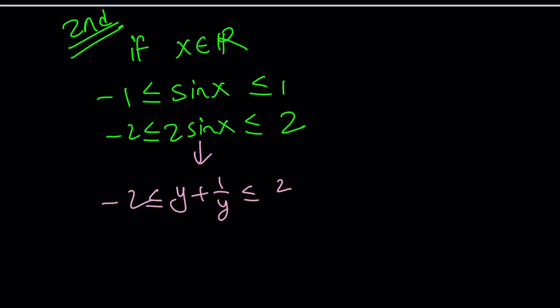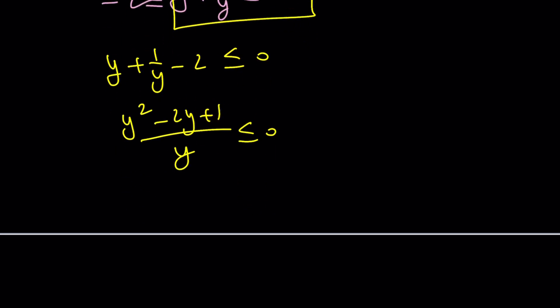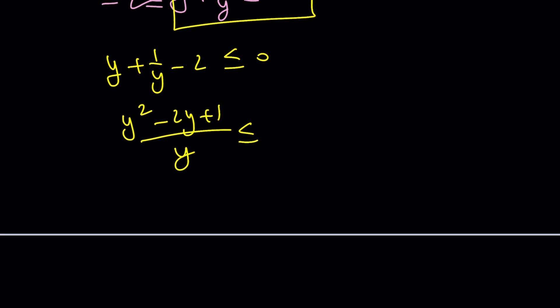What does that mean, though? Well, here's the thing. If you take this, okay, this means Y plus one over Y minus two is less than or equal to zero. Or if you just make a common denominator, Y squared minus two Y plus one over Y is less than or equal to zero. Don't cross multiply. That's a mistake. Just be careful. You can do it after you check something.